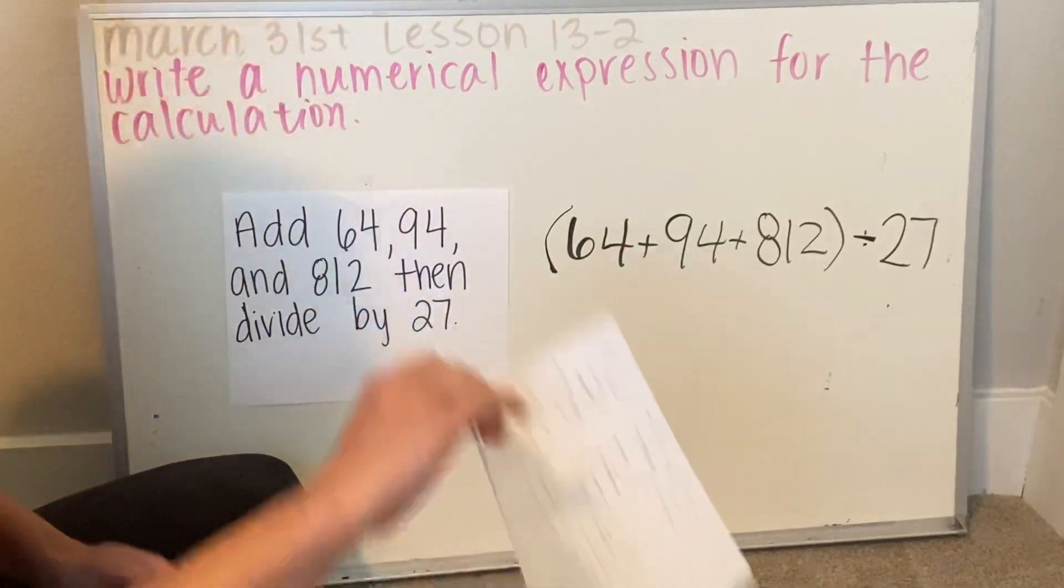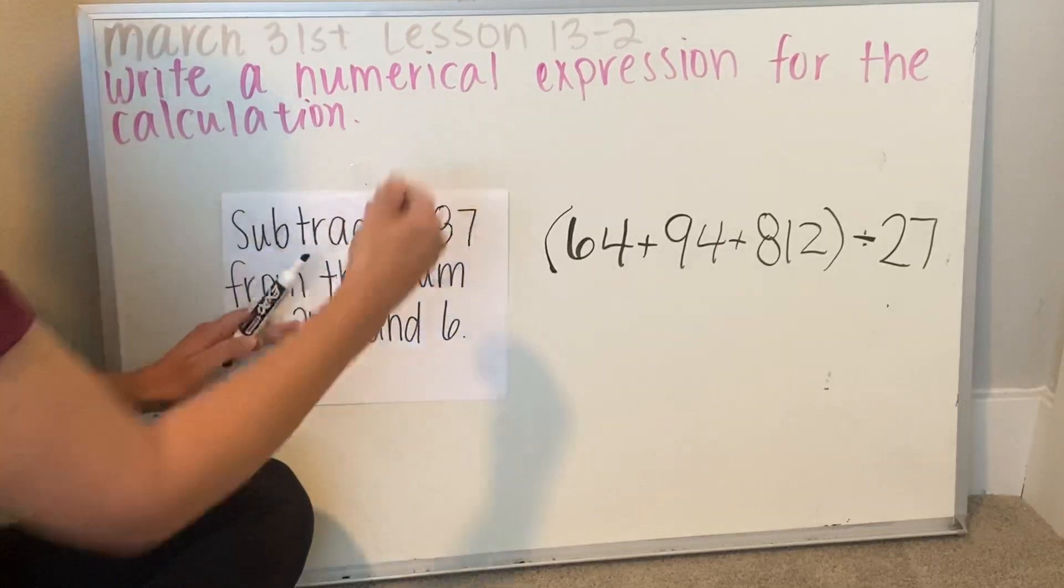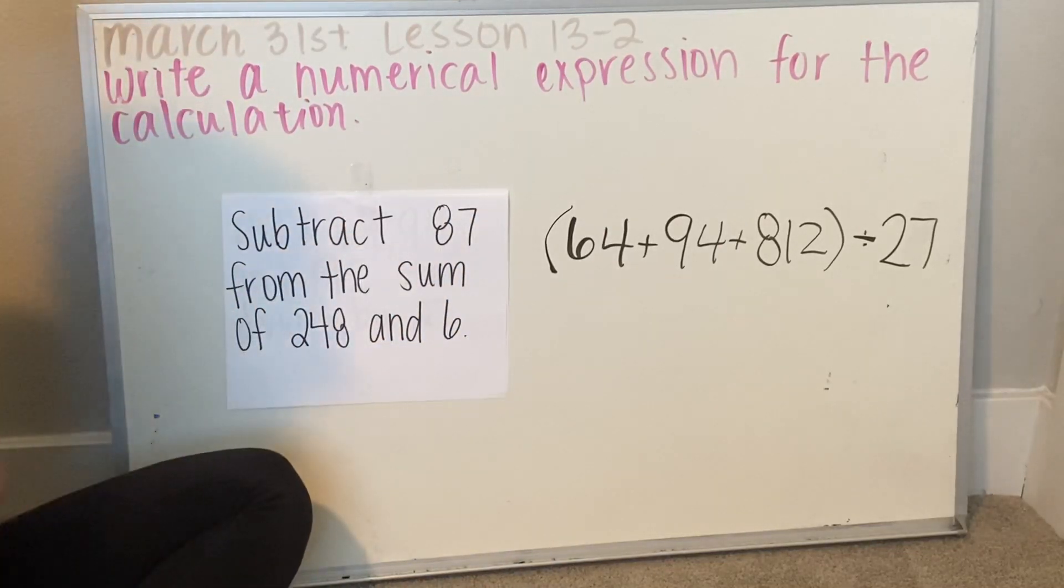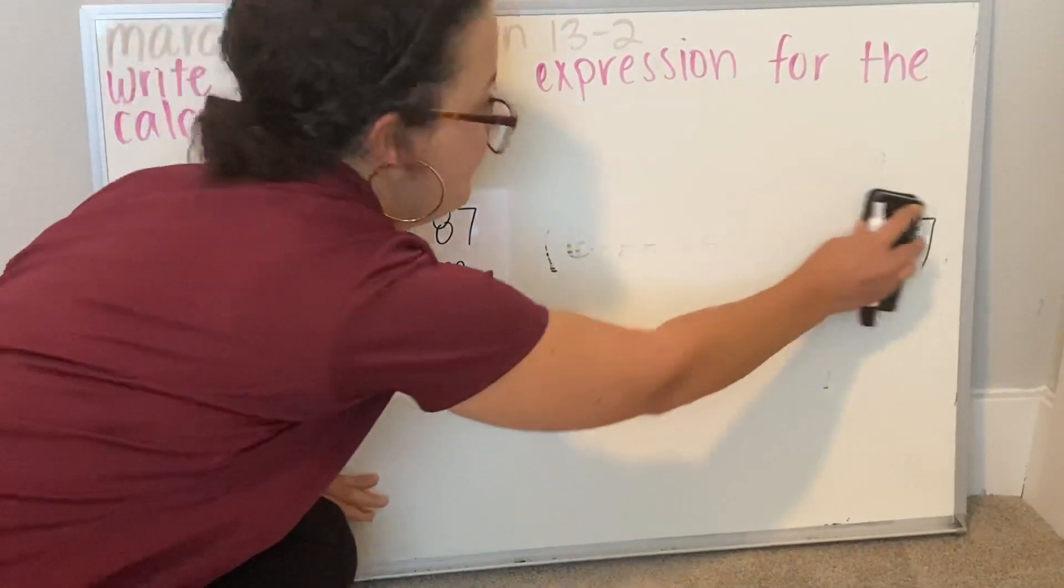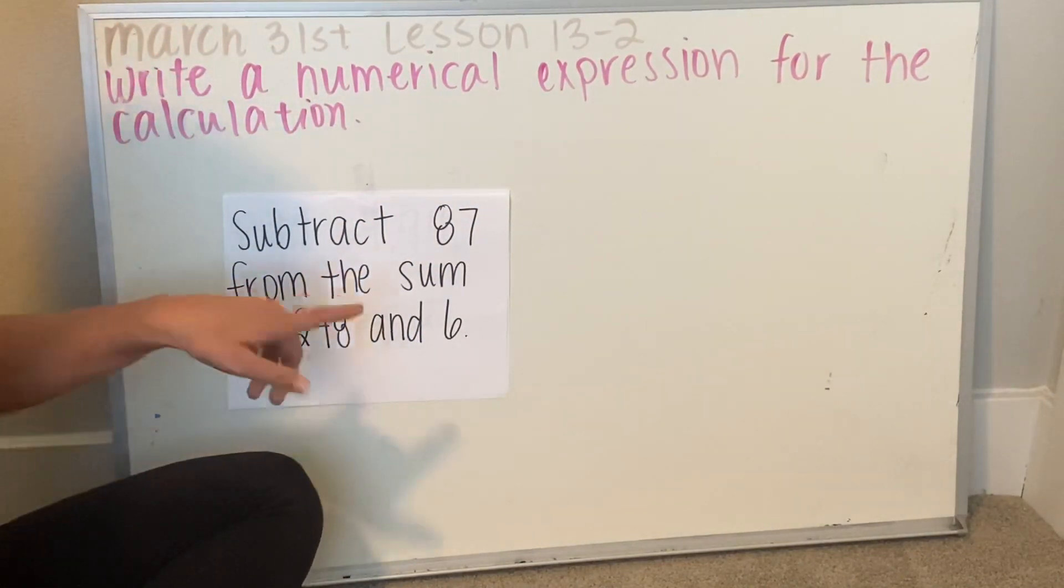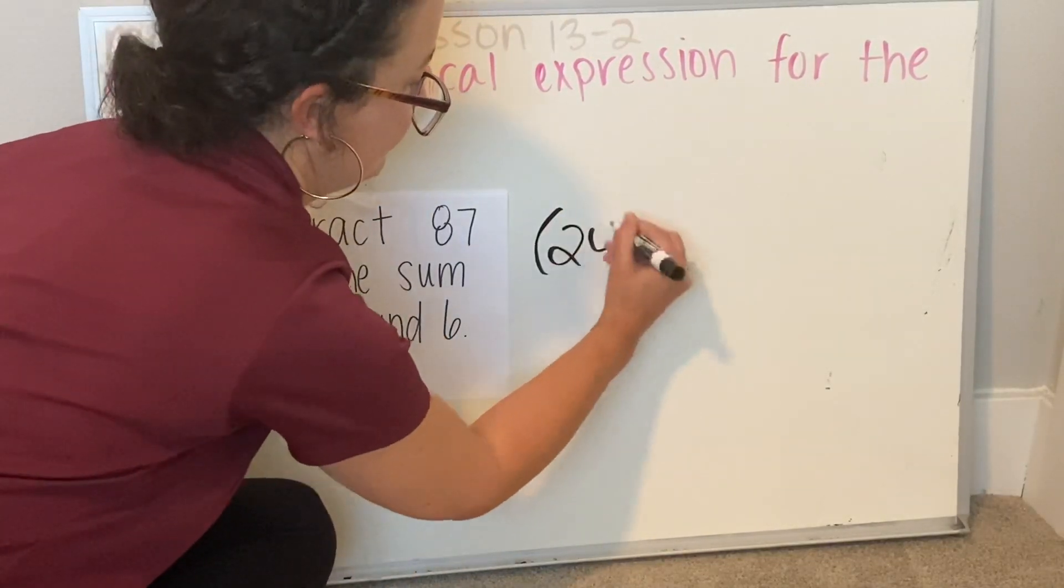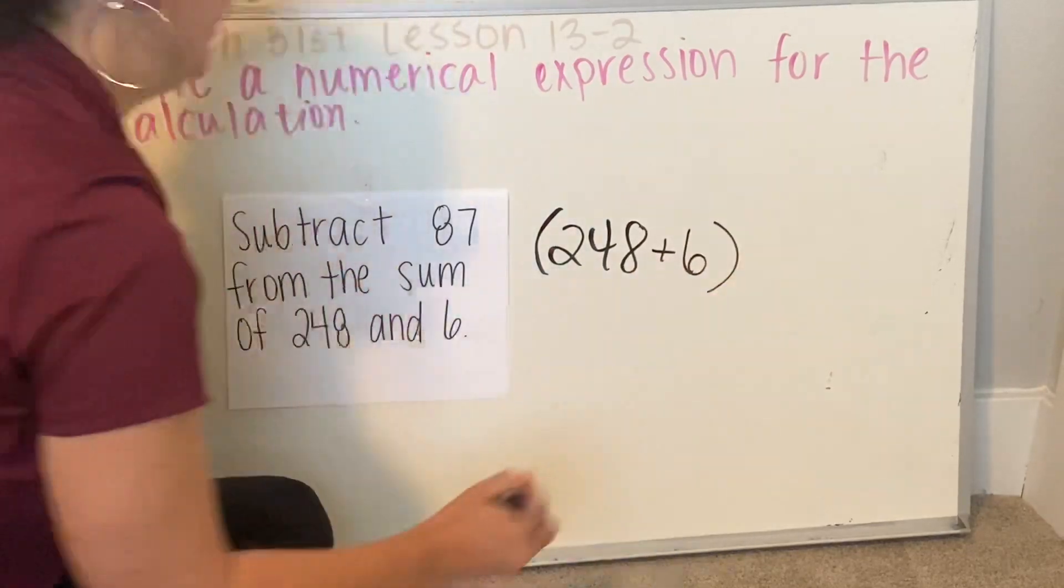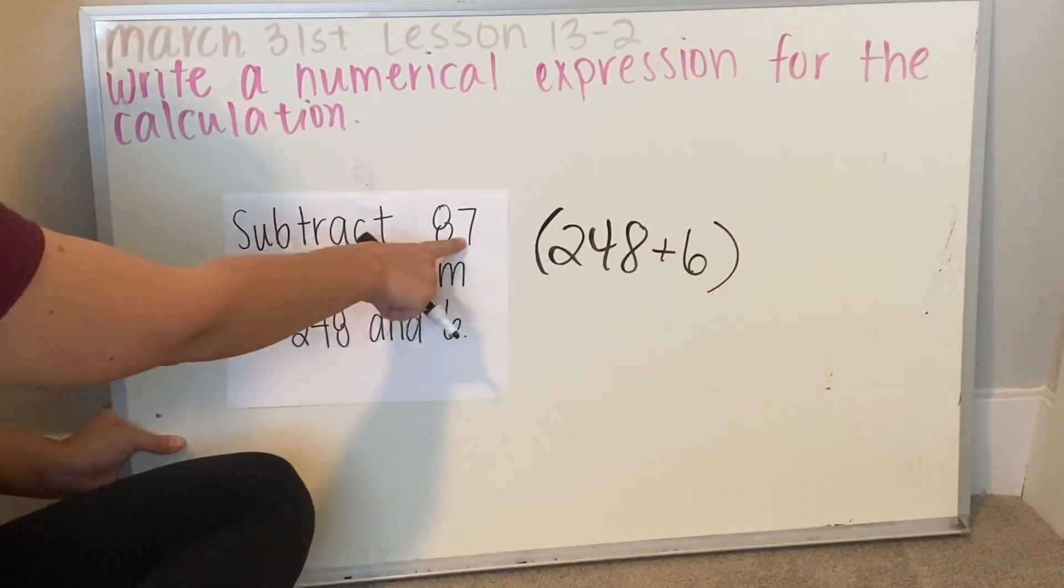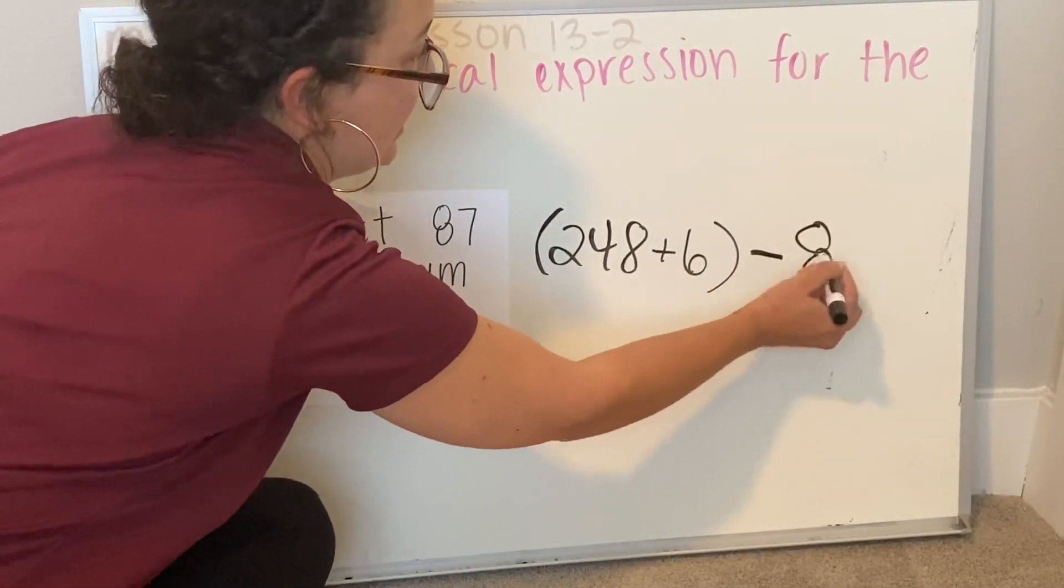Let's try another one. Subtract 87 from the sum of 248 and 6. So I need to know that I'm going to add 248 and 6, and then I'm going to subtract 87 from this sum.